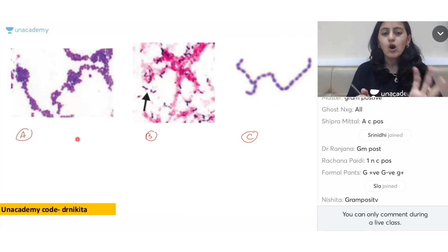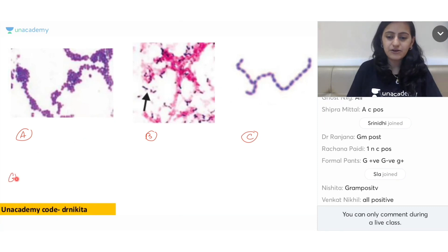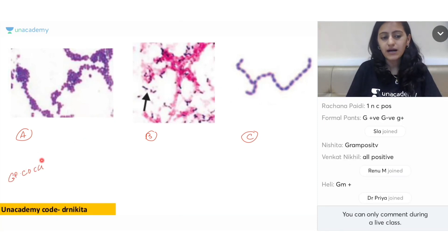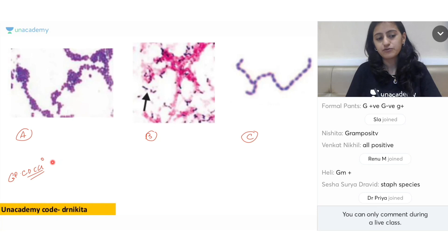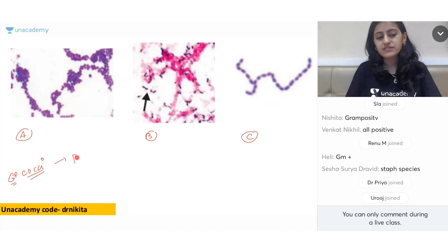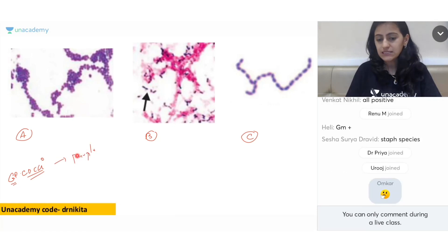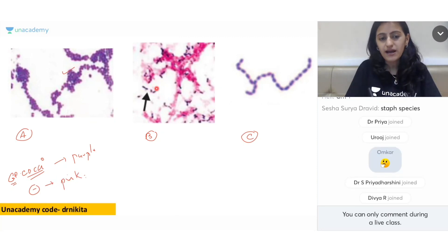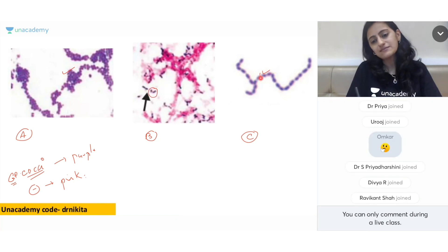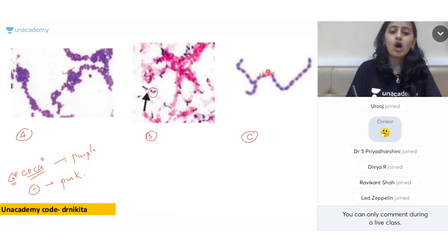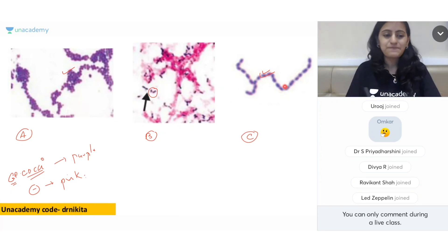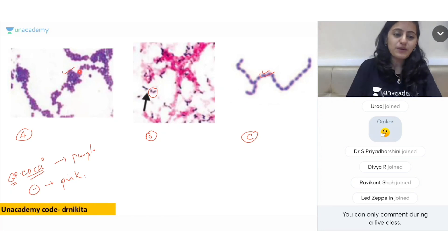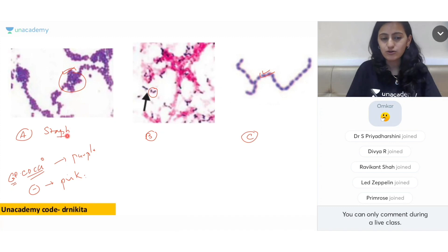All of these are basically your gram-positive cocci. Remember, gram-positive organisms are purple in color and gram-negative organisms are pink in color. You can see these purple organisms — all are gram-positive cocci. The first one shows gram-positive cocci in clusters — this is your Staphylococcus.